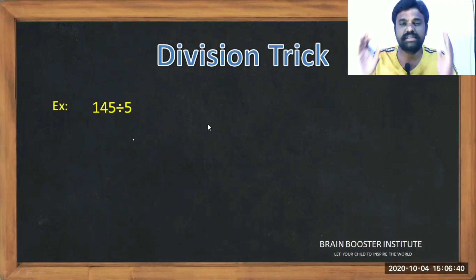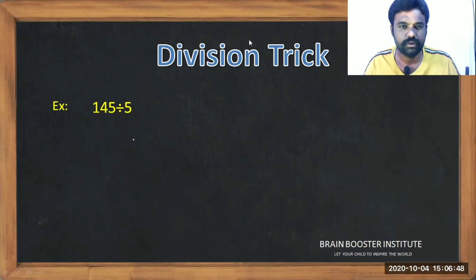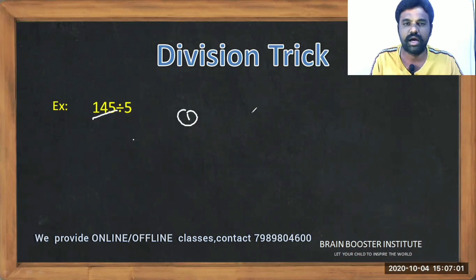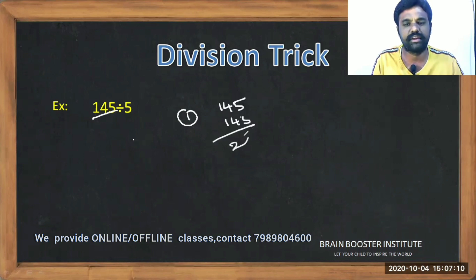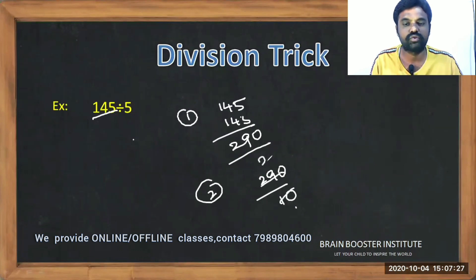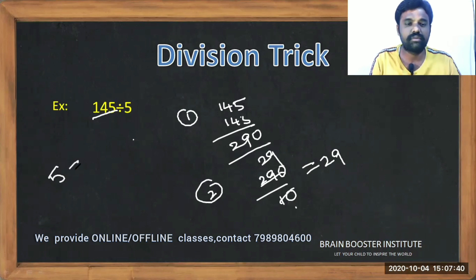We start with a small number: 145 divided by 5. Step one — add 145 to itself, or equivalently multiply by 2. So 145 plus 145 equals 290. Step two — divide this result by 10. So 290 divided by 10 equals 29. The answer is 29. Very simple. The reason: 5 is equal to 10 divided by 2, so it is half of 10.